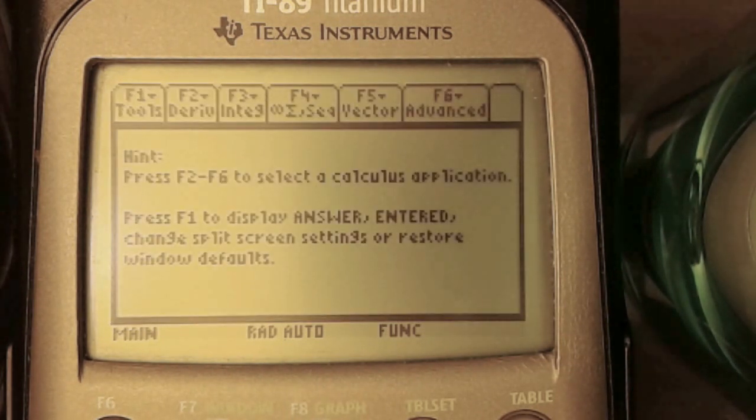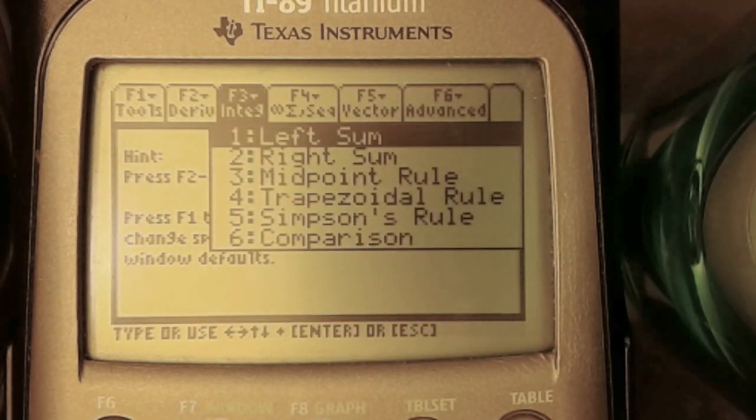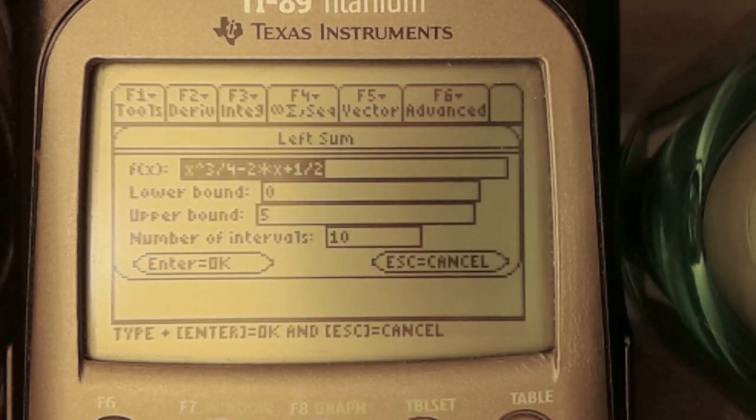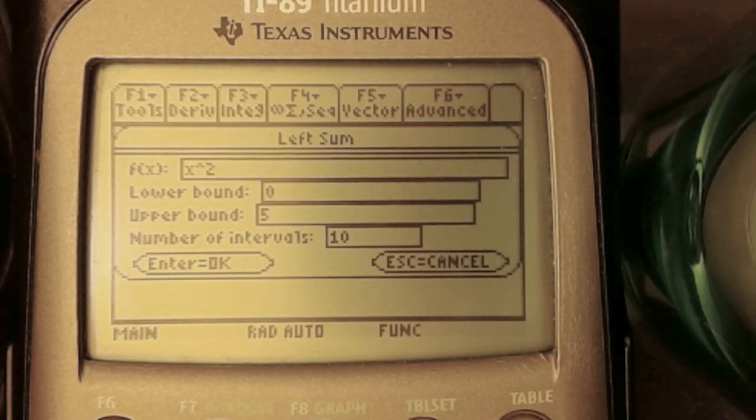All right, let's begin with a left Riemann sum. Let's start with a fairly simple equation: a parabola that has been shifted down two units. You should already know what the equation and graph look like. In case you didn't know, it's x squared minus 2.